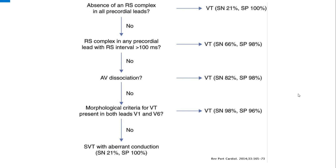This slide shows the Brugada criteria for diagnosis of VT versus SVT. When you find a broad complex regular tachycardia, the first step in Brugada criteria is to look for the presence or absence of RS complexes in precordial leads. If an RS complex is absent in all precordial leads, then it will be a ventricular tachycardia. If this is not the case, we move on to the next step.